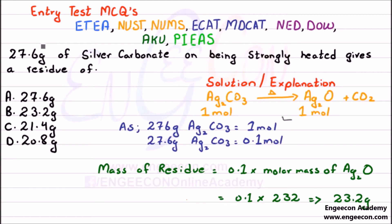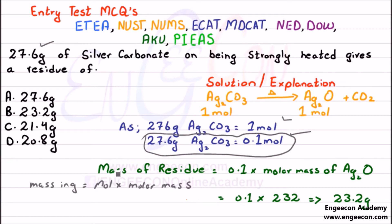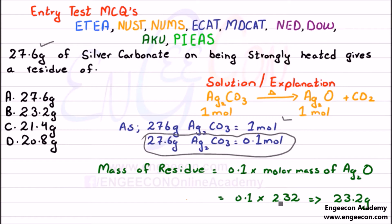In the MCQ we have 27.6 grams. We get 27.6 grams by dividing 276 by 10. Similarly, dividing 1 mole by 10 gives 0.1 mole — so 27.6 grams equals 0.1 mole. From the basic formula, mass in grams equals moles multiplied by molar mass. So the mass of residue = 0.1 × 232 = 23.2 grams.